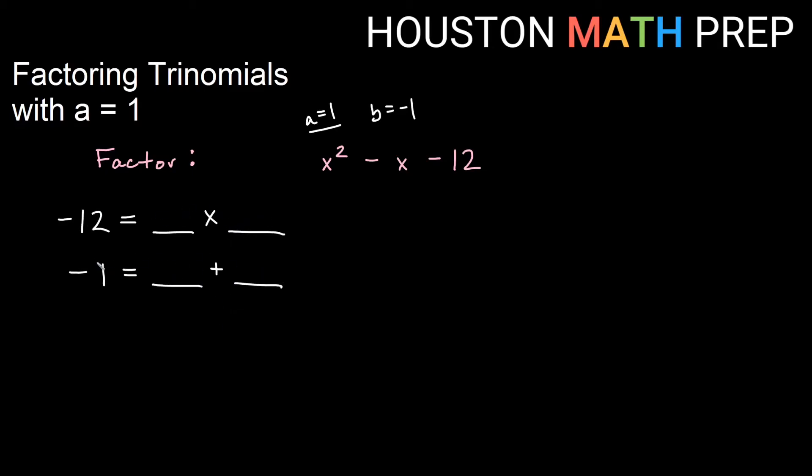They're adding to get a negative, so the bigger number should be negative. If you think about it for a second, you might get that negative 4 times 3 will give us negative 12 and negative 4 plus 3 will give you negative 1. So negative 4 and 3 are the numbers that work in my situation here. In the end, we would get x minus 4 and x plus 3 as our answer for how this factors.